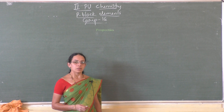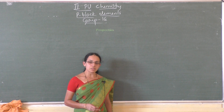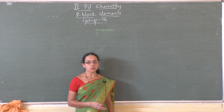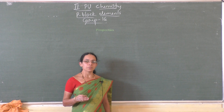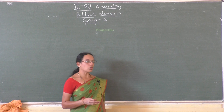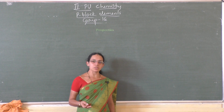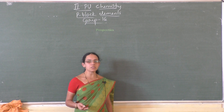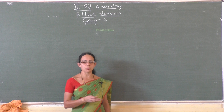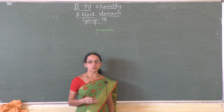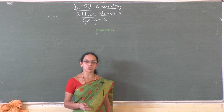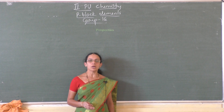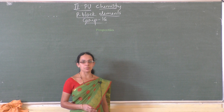Ozone is thermodynamically unstable with respect to oxygen because its conversion into oxygen is an exothermic process, and there is an increase in entropy during that conversion from ozone to oxygen. Therefore that makes delta G more negative, hence its conversion of ozone to oxygen is a spontaneous reaction.